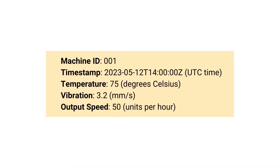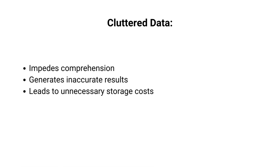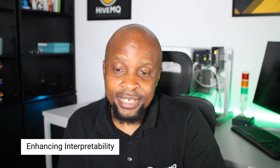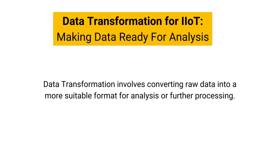For instance, if temperature readings from different sensors come in both Celsius and Fahrenheit, they should be normalized to a standard unit. Similarly, time data may come in different formats like Unix timestamp or different time zones, and normalizing this to a standard format like Coordinated Universal Time ensures consistency. After normalization, the data might look like this. This process is essential because messy or cluttered data can impede comprehension and generate inaccurate results when analyzed or visualized. Moreover, data redundancy can lead to unnecessary storage costs, so through normalization the data is tidied up, made consistent, and presented in a uniform format.